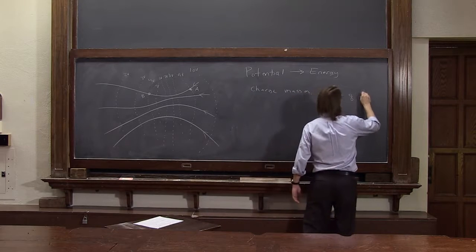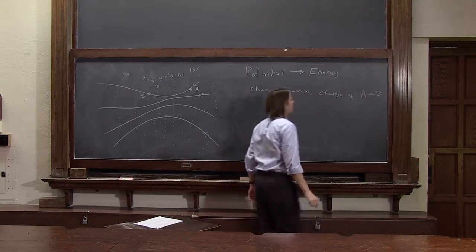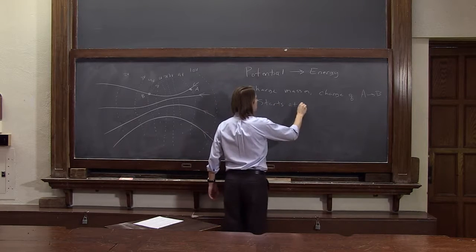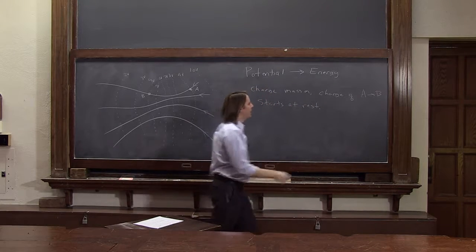All right. So this charge, mass m, charge q, goes from A to B and starts at rest. So how fast at B?